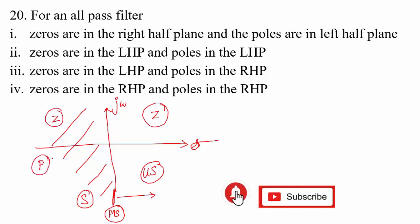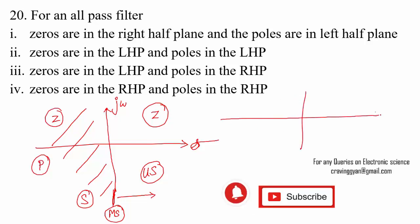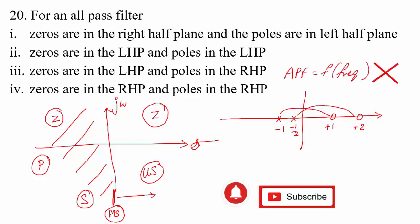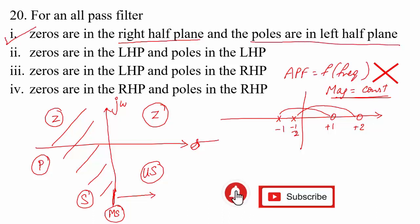For an all-pass filter, if there is a zero at +1 then there is a pole at −1; if there is a zero at +2 then the pole is at −1/2 — it is a reciprocal relationship. An all-pass filter is not a function of frequency range; its magnitude is constant. Therefore, for an all-pass filter, zeros lie in the right half of the s-plane and poles lie in the left half.